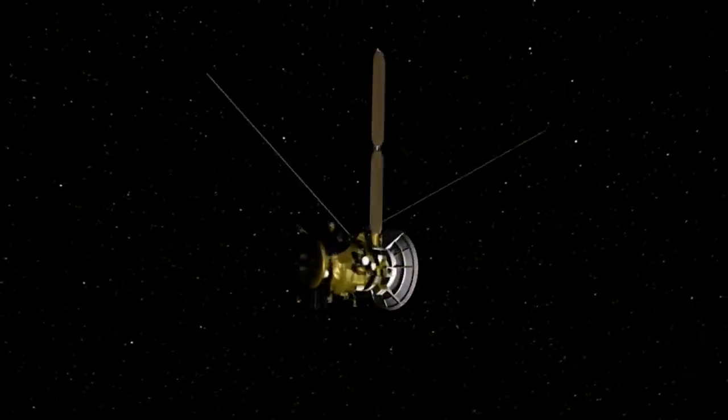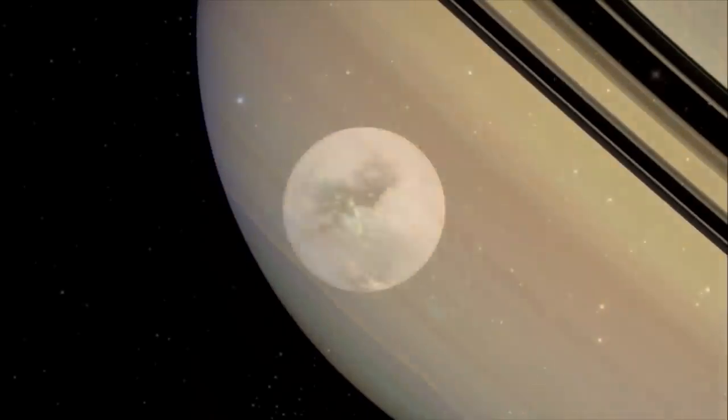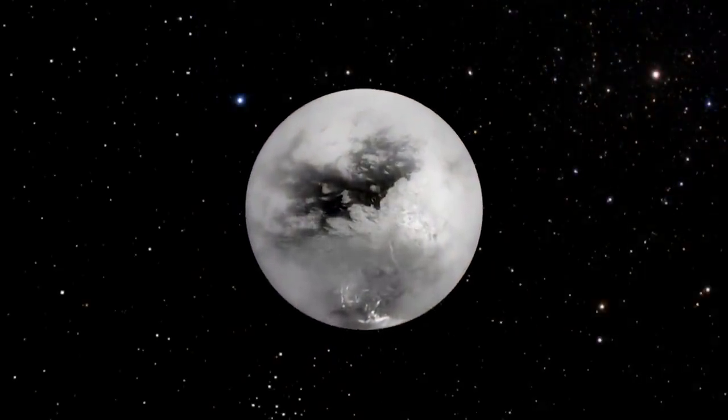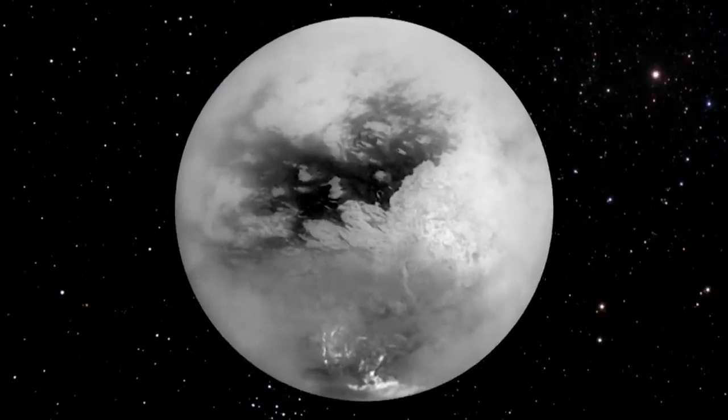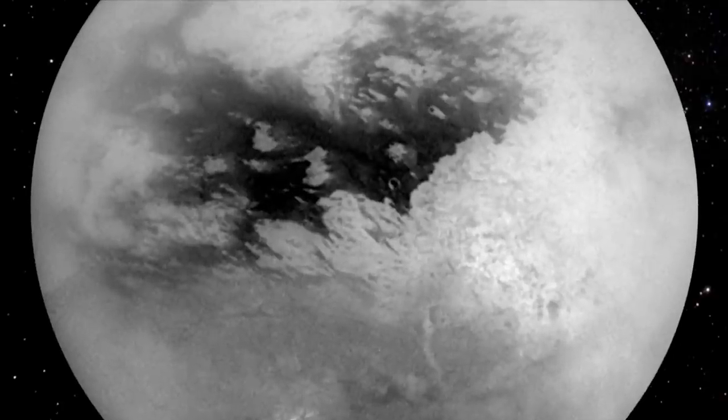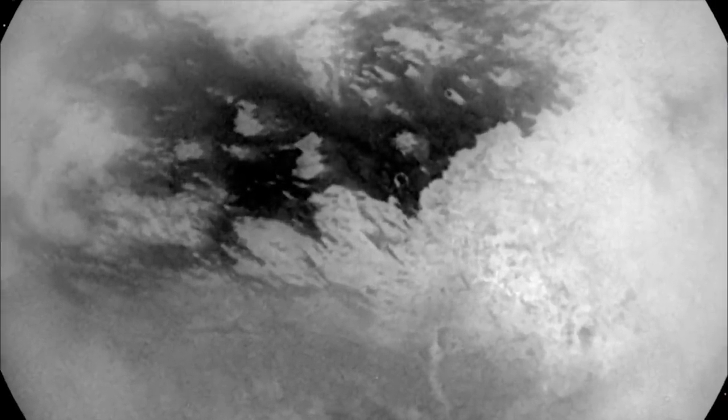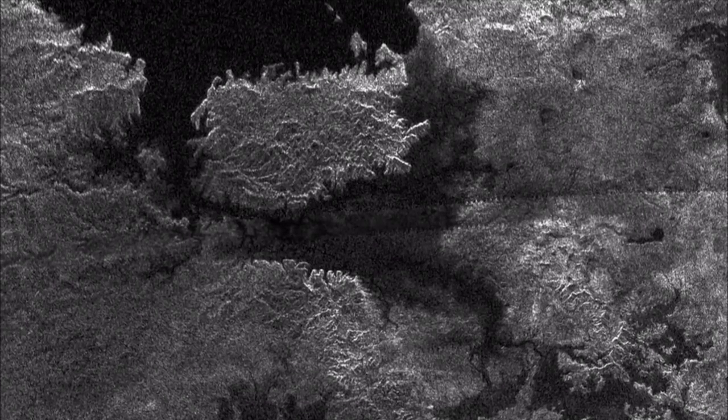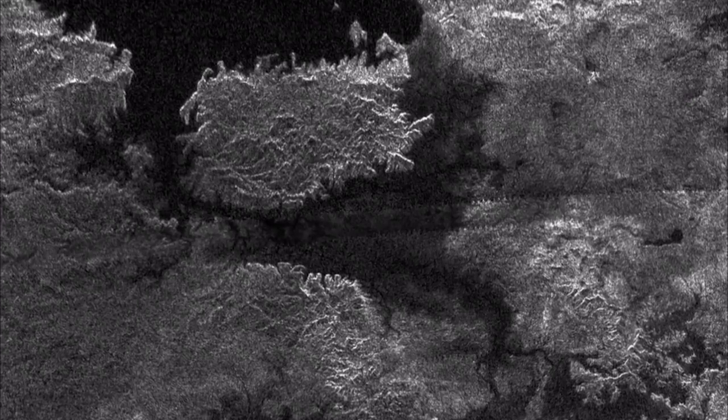When the Cassini mission arrived at Saturn in 2004, it used a high powered camera equipped with an infrared filter to penetrate the veil of Titan's thick haze. What Cassini found was even stranger than expected: a surface divided into mysterious light and dark regions resembling ancient coastlines. Cassini also bounced radar signals off of Titan, confirming that the moon's surface is solid with unusual landforms like ice volcanoes and wind-blown dunes.